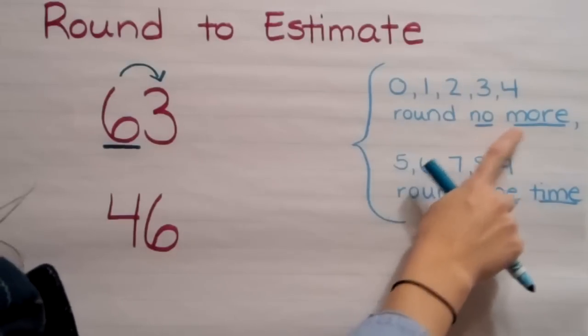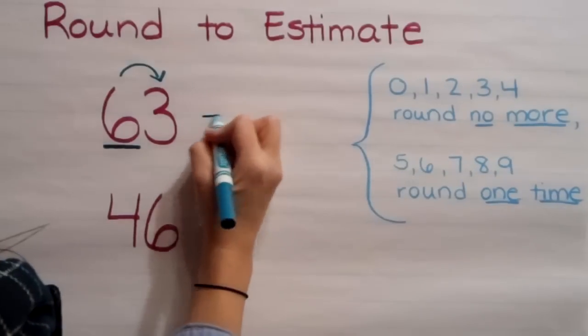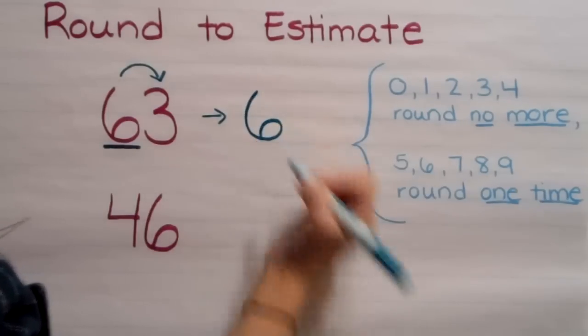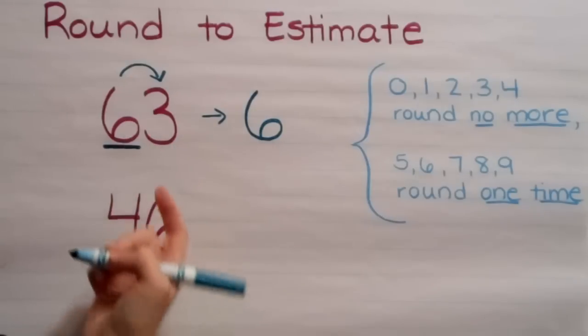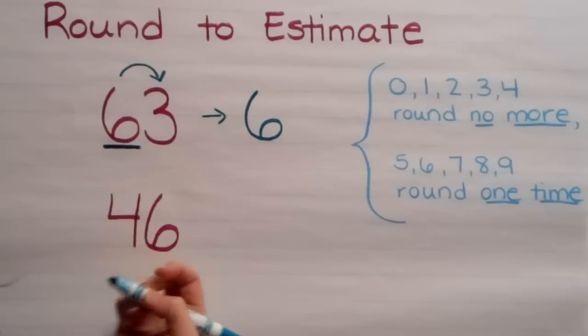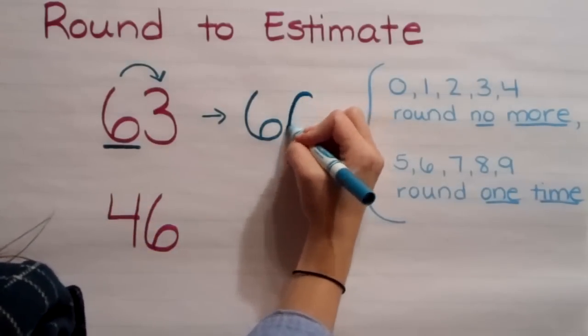The three says to round no more. So the six is going to stay a six, and everything behind it, which is one more place value, the ones place, is going to become a zero.